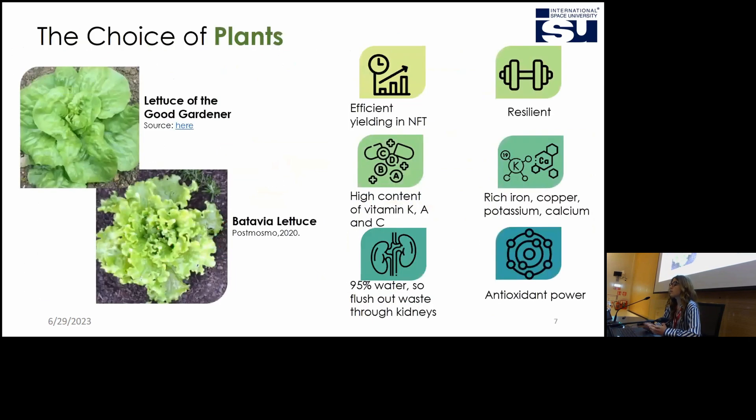For the choice of plants, I decided to take into consideration not only logistic points of view, for example the time of sprouting or the resistance of the plants, but also possible benefits for the astronauts. I chose the lettuce of the good gardener and the batavian lettuce because they have important properties as antioxidant power and high content in multiple vitamins.